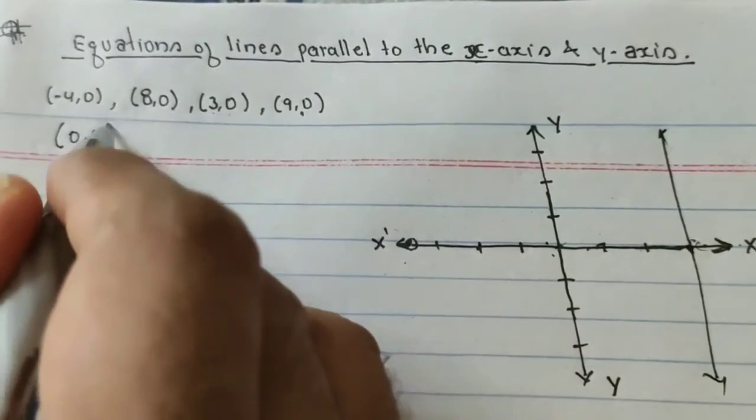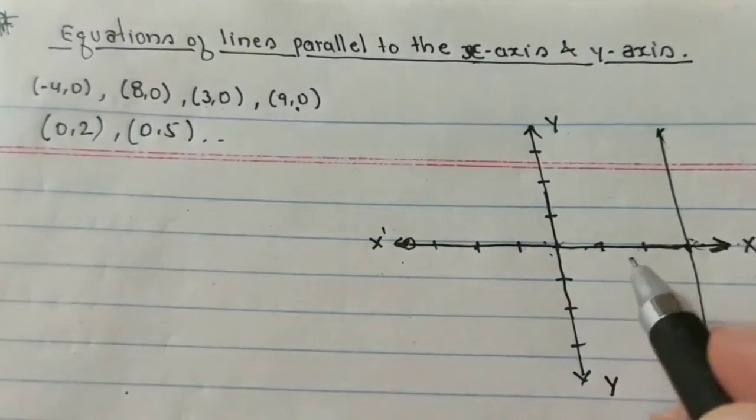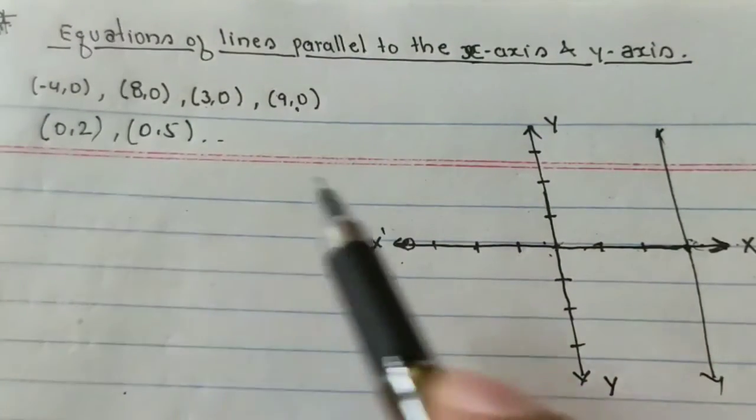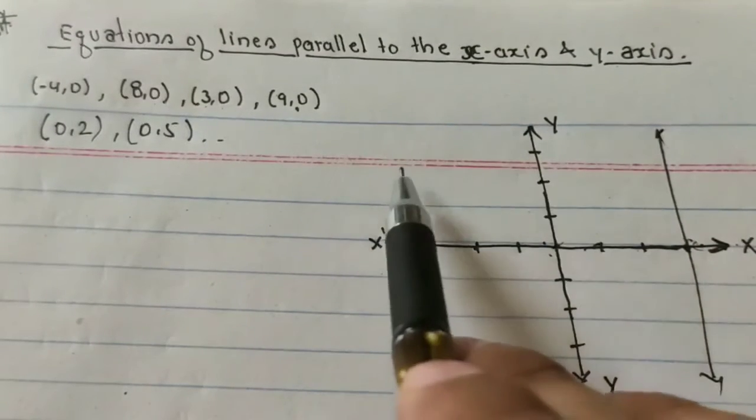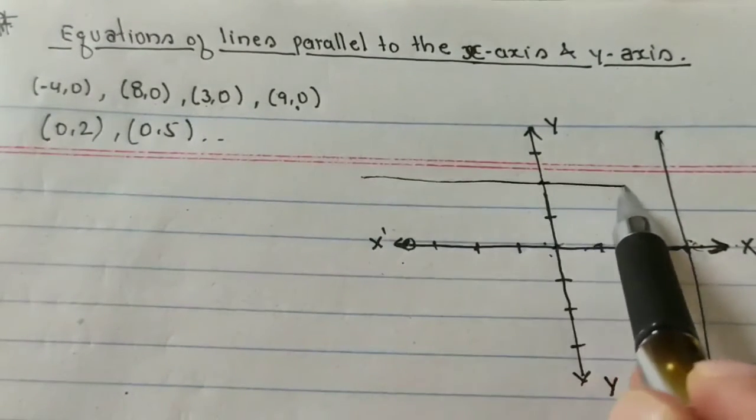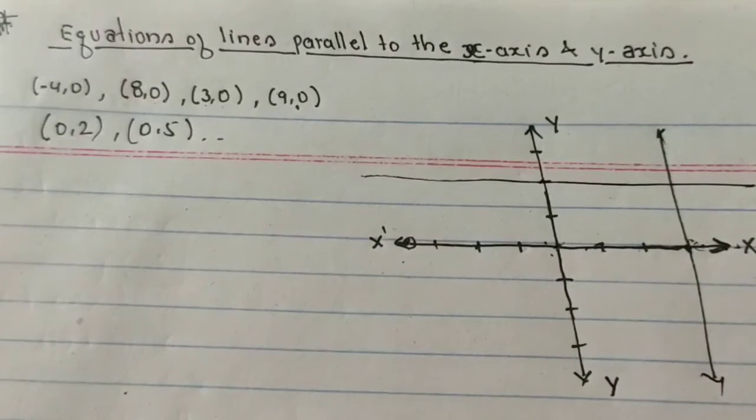If the given points were (0, 2) or (0, 5) something like this, then suppose there is (0, 2), my axis is 0, 0 and 2, 2, then my line will be parallel to your x-axis.